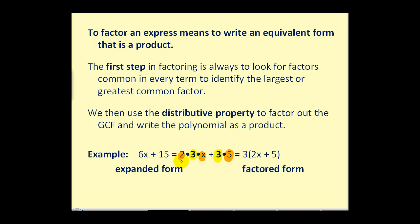We can factor the 3 out, and the factors not part of the GCF would make up the remaining expression of 2x plus 5. This is considered expanded form, and this is considered factored form. And notice that this is equivalent to 6x plus 15, but it is now written as a product.